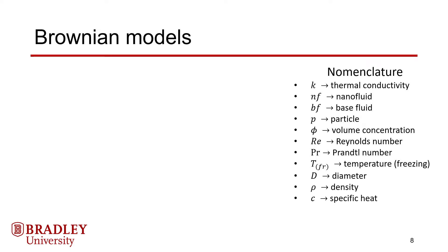Much of the same parameter nomenclature applies, but there are also new variables to consider. Re is the Reynolds number of the fluid, which is a function of velocity, density, and viscosity. Pr is the Prandtl number, which is a fluid property dependent on temperature. T represents the temperature of the nanofluid, with the subscript FR meaning freezing temperature. Additionally, D is the diameter, rho is the density, and C represents the specific heat.